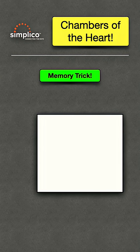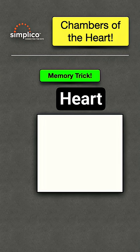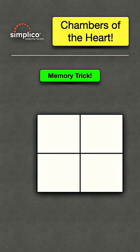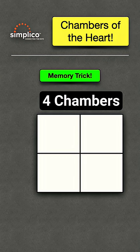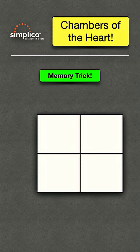First, you're going to draw a square. This represents the heart. Then you're going to divide the square into four smaller boxes. These represent the four chambers of the heart.